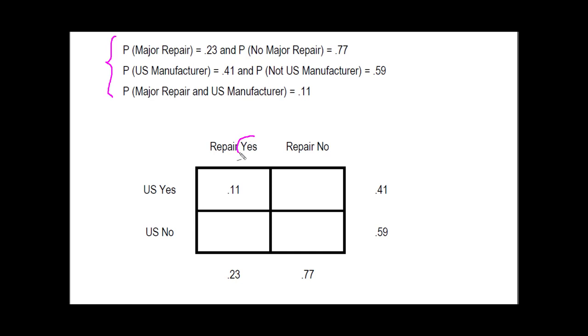The first thing I'm going to do is put my two positive responses here on this corner, and then my complement, which is no. Probability of major repair 0.23, that's this column. Probability of no major repair, that 0.77, is this column. I had 41% said yes for US manufacturers, so that becomes this row. And no US manufacturer becomes this row.